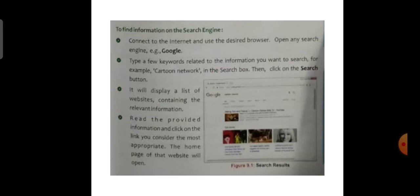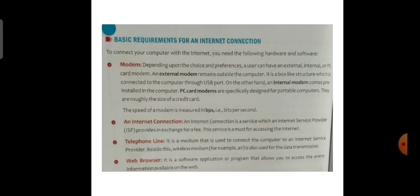Basic requirements for an internet connection. To connect your computer with the internet, you need the following hardware and software. Modem: depending upon choice and preferences, a user can have an external, internal or PC card modem. An external modem remains outside the computer — it is a box-like structure connected to the computer through a USB port. An internal modem comes pre-installed in the computer. PC card modems are specifically designed for portable computers and are roughly the size of a credit card. The speed of a modem is measured in bps — bits per second.